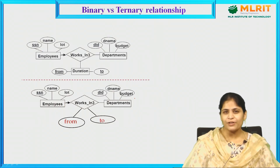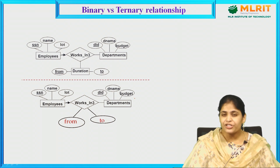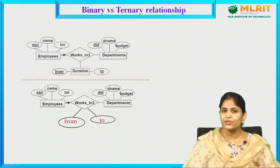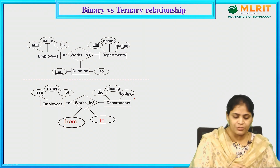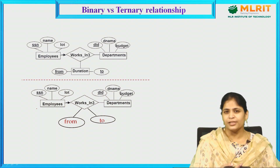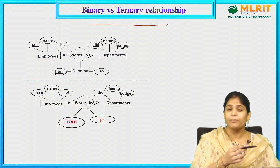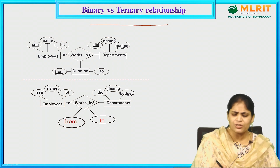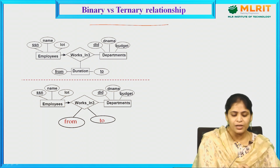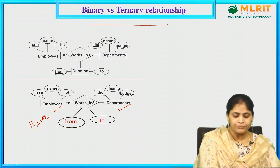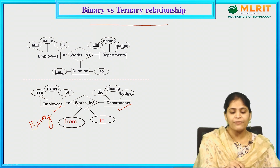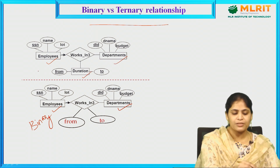The next concept is binary versus ternary relationship. A binary relationship is one that contains exactly two entities. A ternary relationship contains exactly three entities. In the binary example, a relationship has two entities — employees and departments. In the ternary example, the relationship has three entities: employees, duration, and departments.